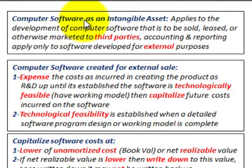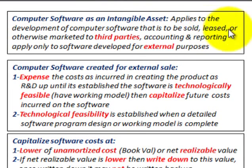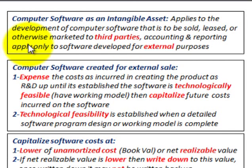Here we're going to be looking at computer software as an intangible asset, where it applies to the development of computer software that is to be sold, leased, or otherwise marketed to third parties or outside parties. We're going to be looking at accounting and reporting where it applies only to software developed for external purposes.